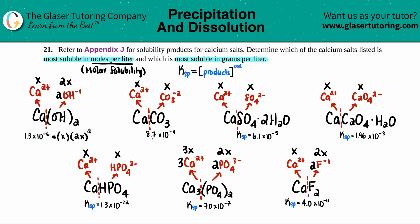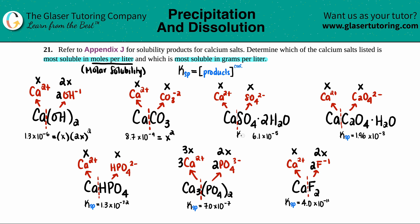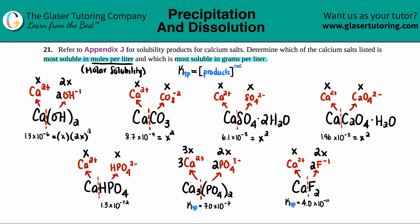For calcium carbonate, Ksp is 8.7 × 10⁻⁹, which equals x times x, so x². For calcium sulfate, Ksp is 6.1 × 10⁻⁵, which equals x times x, so x². For calcium oxalate, Ksp is 1.96 × 10⁻⁸, which equals x², and for calcium hydrogen phosphate, Ksp is 1.3 × 10⁻³², which also equals x².